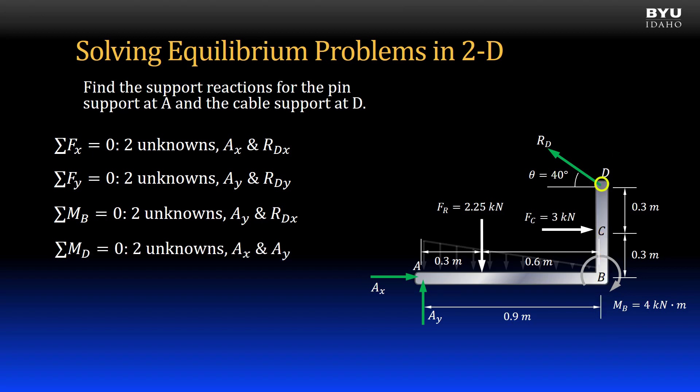If I sum moments to zero about point D, the line of action of RD passes through the point and will not be in the equation. But both Ax and Ay will be, so again, two unknown variables.